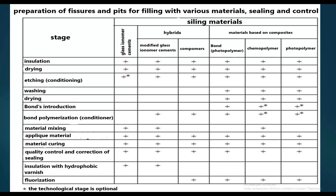If using chemopolymer: insulation, drying, etching, washing, drying; bond introduction and bond polymerization are optional depending on which chemopolymer is used; then material mixing, application of material, material curing, quality control and correction of sealing, and fluoridation.